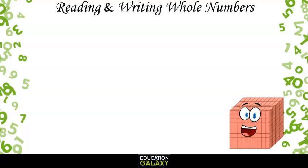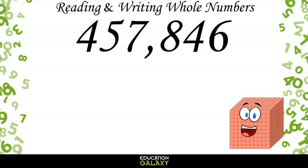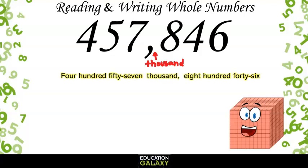When reading numbers, you want to read everything before the comma, and then you read the comma as thousand, and then read everything after the comma. So this number would be 457,846.